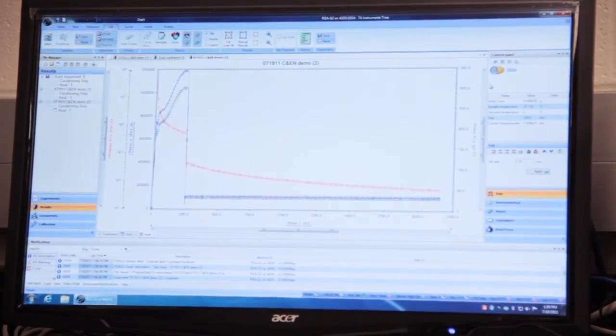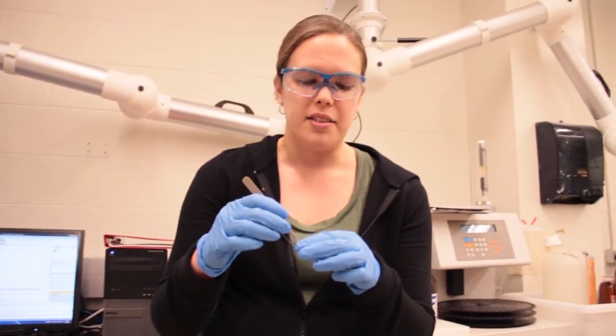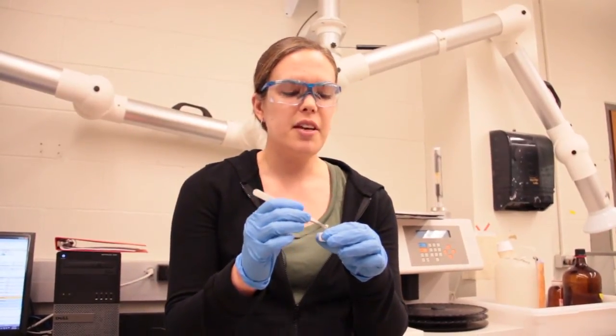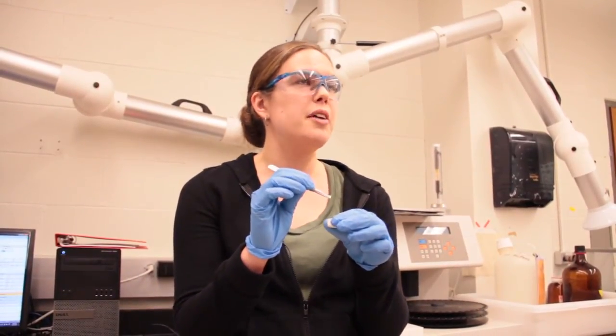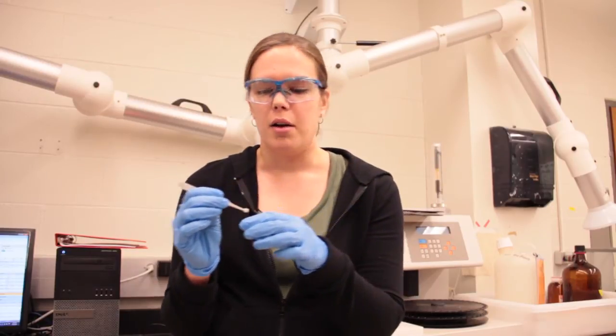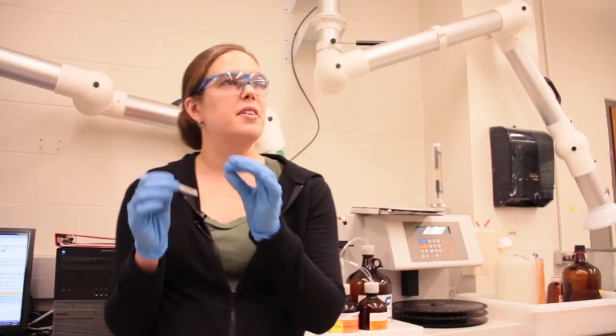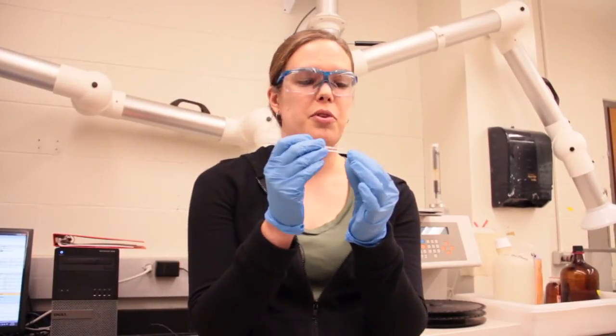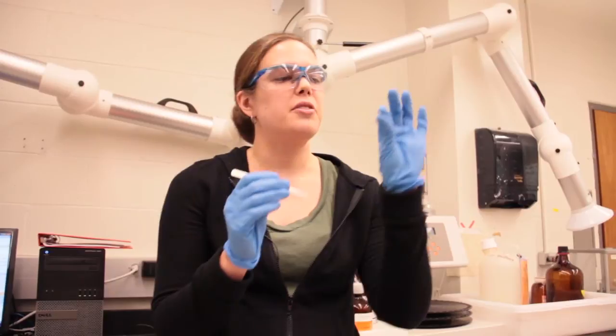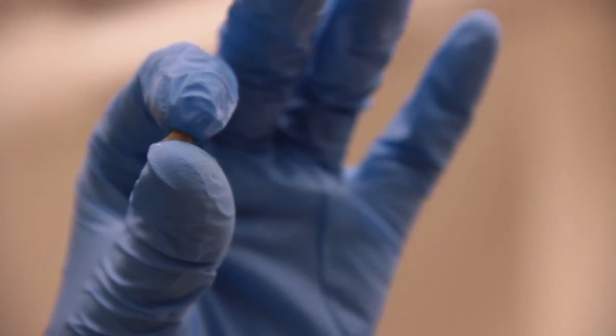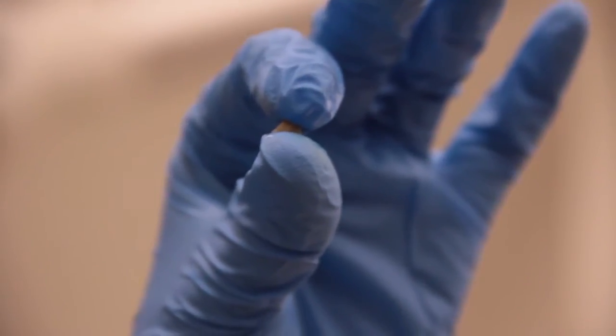The other material I want to show you today is an elastin-mimetic hybrid hydrogel. These hydrogels mimic the structure of natural elastin because the polymers have alternating segments of a flexible synthetic polymer and a peptide that's used for cross-linking. As you can see, these hydrogels are very strong, but they can also absorb water and can be compressed and returned to their original shape.